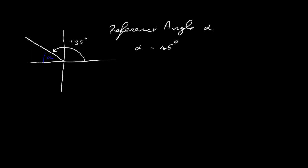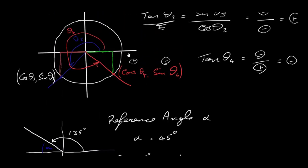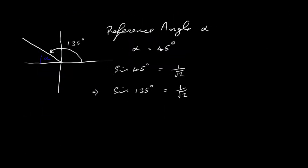What you'll find is that the sine, cos, and tan of 45 degrees — the reference angle — will be the same numerically as the sine, cos, and tan of 135 degrees. For example, the sine of 45 degrees is 1 over root 2, so the sine of 135 degrees is also 1 over root 2. But we're in the second quadrant, so we need to check the sign. In the second quadrant, sine is positive, so this is our answer: positive 1 over root 2. The cosine of 135 degrees: we find the cosine of 45 degrees, which is also 1 over root 2. But cosine in the second quadrant is negative, so this will be negative 1 over root 2.